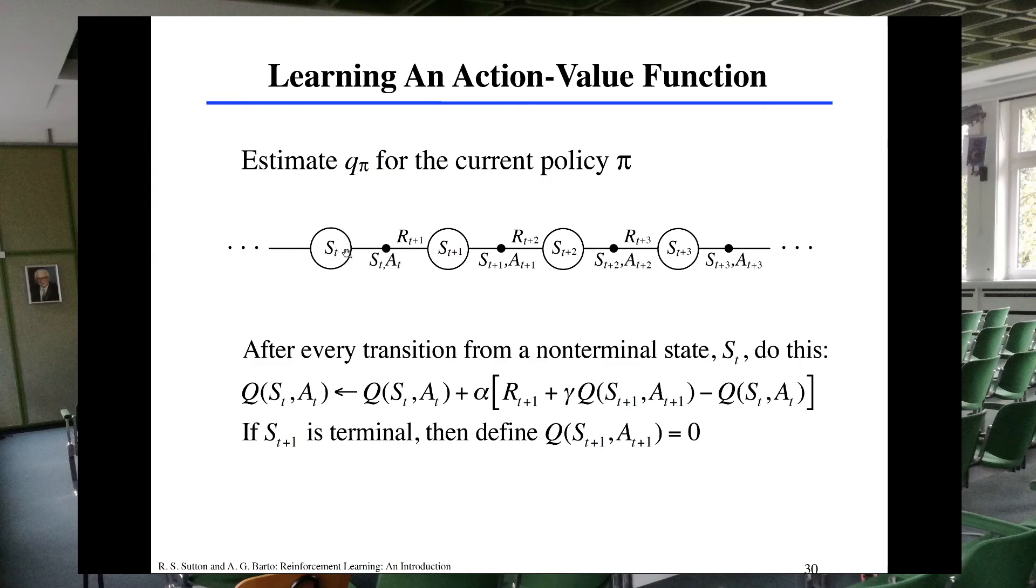So the transitions are going to be the same from one state, you will apply some action, get a reward and move to the next state. And in this case if the next state is terminal, then we will define that the q value for that will be zero.